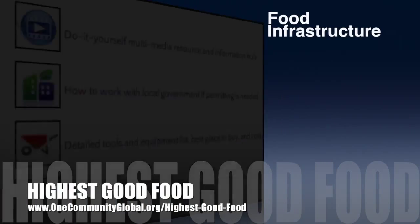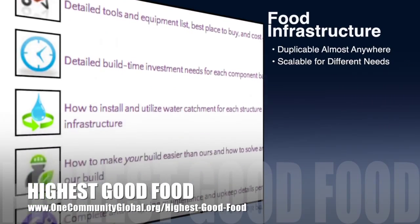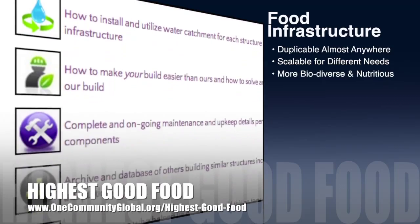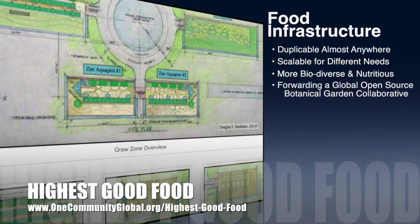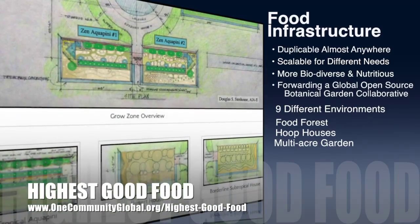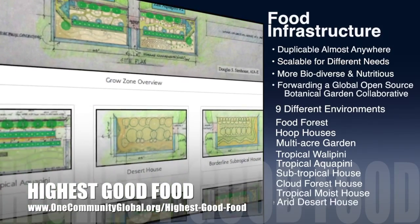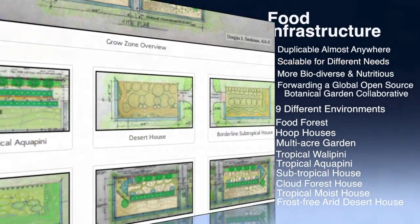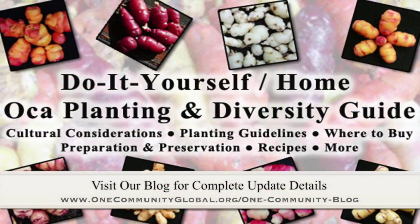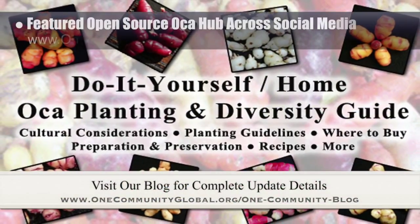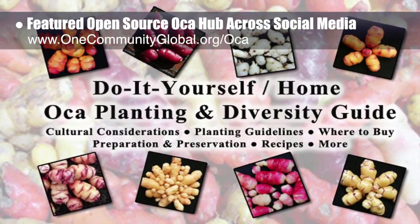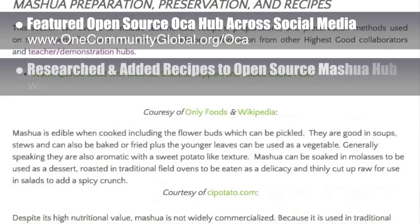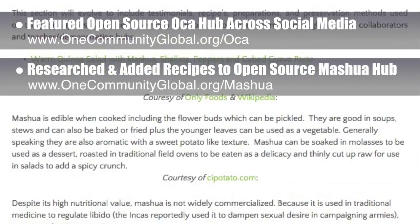One Community's approach to highest good food is duplicable almost anywhere, scalable for different needs, more biodiverse and nutritious, part of forwarding a global open source botanical garden collaborative, and includes nine different free shared and duplicable growing environments. This week, the core team working on highest good food featured our open source Oka Hub across our social media channels using a new social media image we created. We also researched and added additional recipes to the open source Mashua Hub.